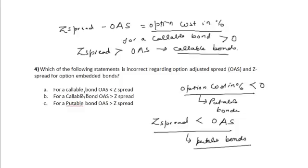Since option cost is less than zero for putable bonds, the Z-spread is less than the option adjusted spread. Looking at the answer options: for a callable bond, the option adjusted spread is less than Z-spread — this is correct. The option that says OAS is greater than Z-spread for a callable bond is incorrect. For a putable bond, OAS is greater than Z-spread — this is correct.